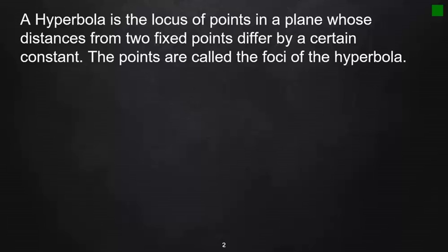A hyperbola is the locus of points in a plane whose distances from two fixed points differ by a certain constant. The points are called the foci of the hyperbola.